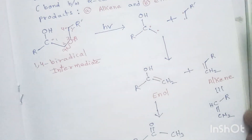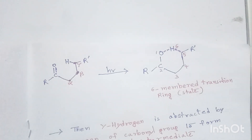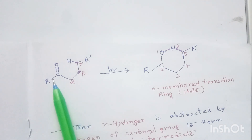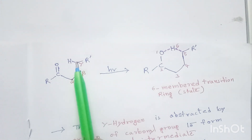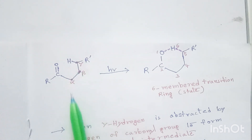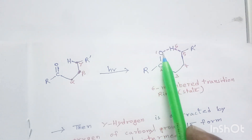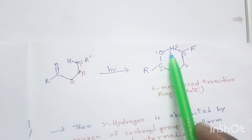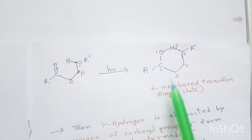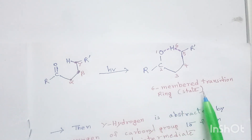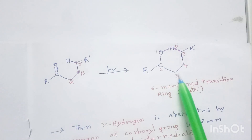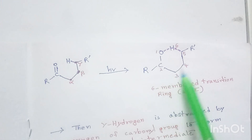Let us see this transition state. This is the carbonyl compound: R-C=O-CH2-CH2-CH2-R. This is alpha carbon, this is beta carbon, this is gamma carbon, and this is the gamma hydrogen. The bond between gamma carbon and gamma hydrogen starts cleaving, and a new bond between the oxygen atom of the carbonyl group and the hydrogen atom starts forming. As a result, we get a six-membered transition state: atoms one, two, three, four, five, six.